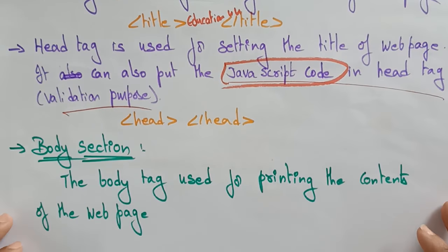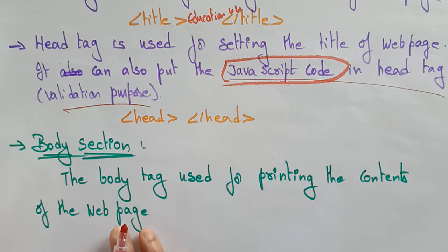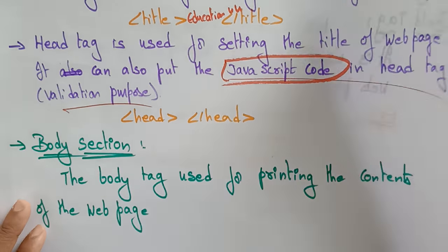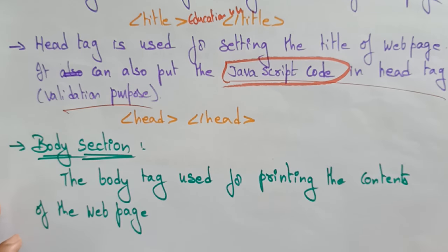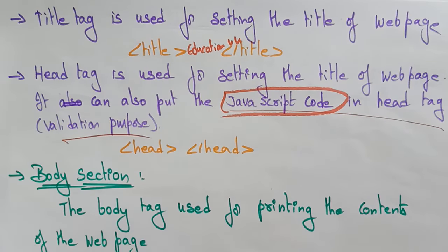Now, the body section: the <body> tag is used for printing the contents of the web page. Whatever content you want to be displayed on the web page, you write it in the body section.